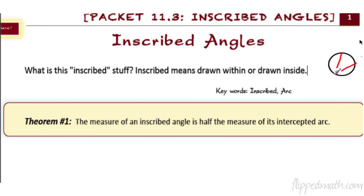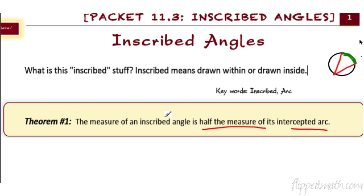Another way to think about it is that the vertex is on the circle. So what's the first theorem we're going to learn? The measure of an inscribed angle is half the measure of its intercepted arc. We have to figure out what the intercepted arc is. The intercepted arc is the arc formed by the end of the rays — the segments — on the inside of the angle. The measure of the angle is half the measure of this arc.